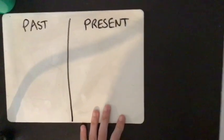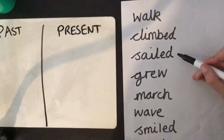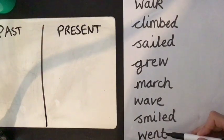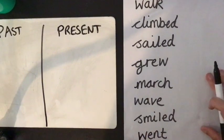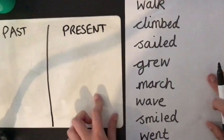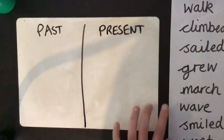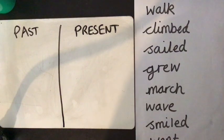Okay here are your list of verbs. We've got walk, climbed, sailed, grew, march, wave, smiled and went. Do you think you can sort these verbs into whether you think they are present tense verbs or past tense verbs and write your ideas down on your piece of paper? Are you ready? Off you go.